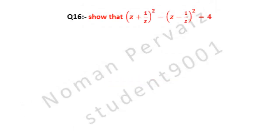Question 16 is: show that (z + 1/z) whole square minus (z - 1/z) whole square is equal to 4.